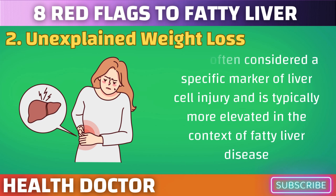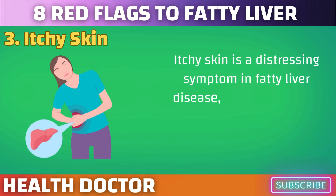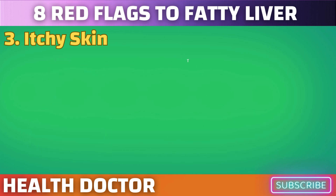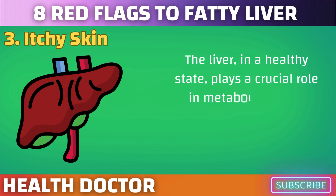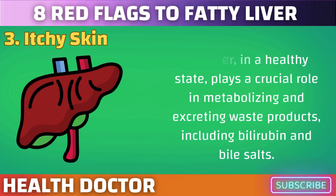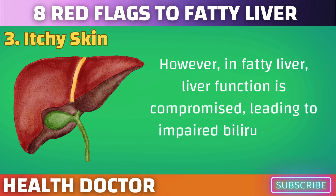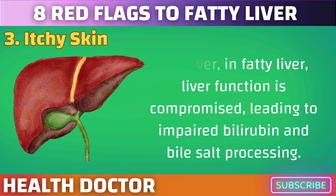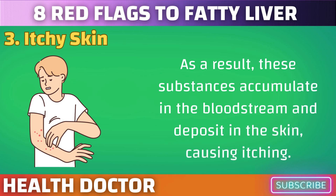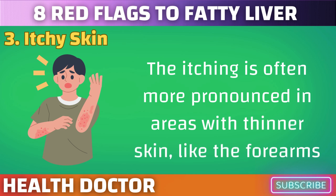ALT is often considered a specific marker of liver cell injury and is typically more elevated in the context of fatty liver disease. Itchy skin is a distressing symptom in fatty liver disease, primarily caused by the buildup of bile salts and toxins in the bloodstream. In a healthy state, the liver plays a crucial role in metabolizing and excreting waste products including bilirubin and bile salts. However, in fatty liver, liver function is compromised, leading to impaired bilirubin and bile salt processing. As a result, these substances accumulate in the bloodstream and deposit in the skin, causing itching. The itching is often more pronounced in areas with thinner skin, like the forearms.